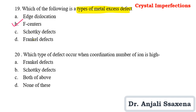Question 20: Which type of defect occurs when the coordination number of an ion is high? When the coordination number is high, meaning cation and anion sizes are almost the same, Schottky defect is shown. When the coordination number is low — meaning there is a size difference between cation and anion — Frenkel defect is shown.